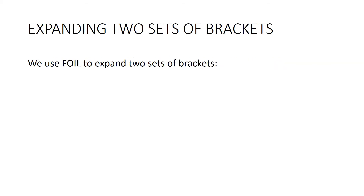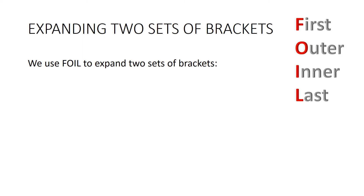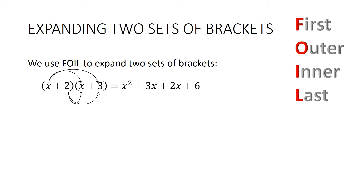When we're expanding two sets of brackets we use FOIL, which stands for First, Outer, Inner, Last. For example (x + 2)(x + 3): first gives x², outer gives 3x, inner gives 2x, last gives 6. We get x² + 3x + 2x + 6, and quite often we can collect the middle two terms together, giving x² + 5x + 6.